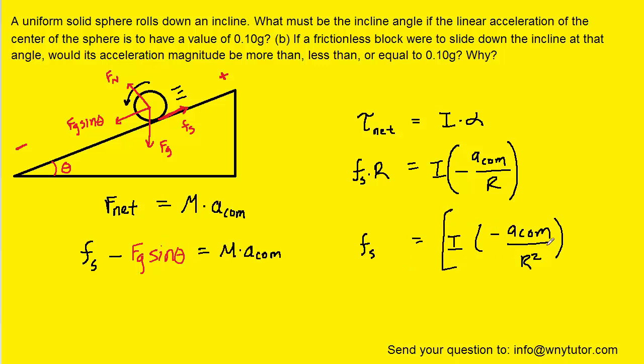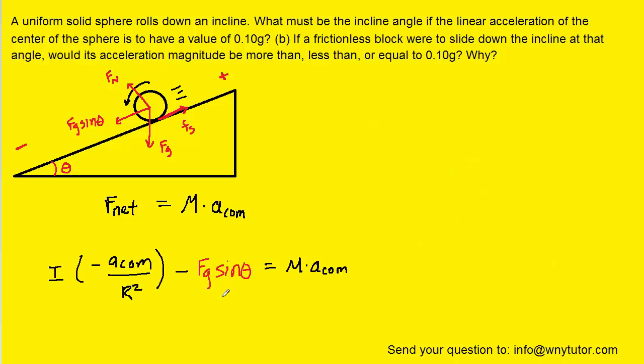We'll take the expression that we developed for the static frictional force and substitute it into our Newton's second law equation. Now we want to solve this equation for the acceleration about the center of mass, and so what we'll do is add the Fg sin θ over to the right and subtract the m times acceleration to the left.